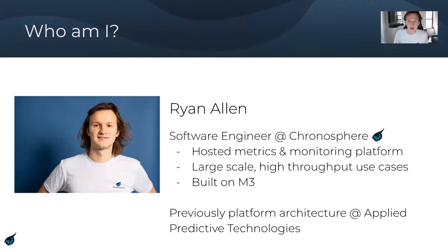The core storage tier within our platform is the open source metrics engine M3, which originated from Uber's original high throughput metrics use case. Before working at Chronosphere on metrics monitoring, I was working specifically on platform architecture at a company called Applied Predictive Technologies.